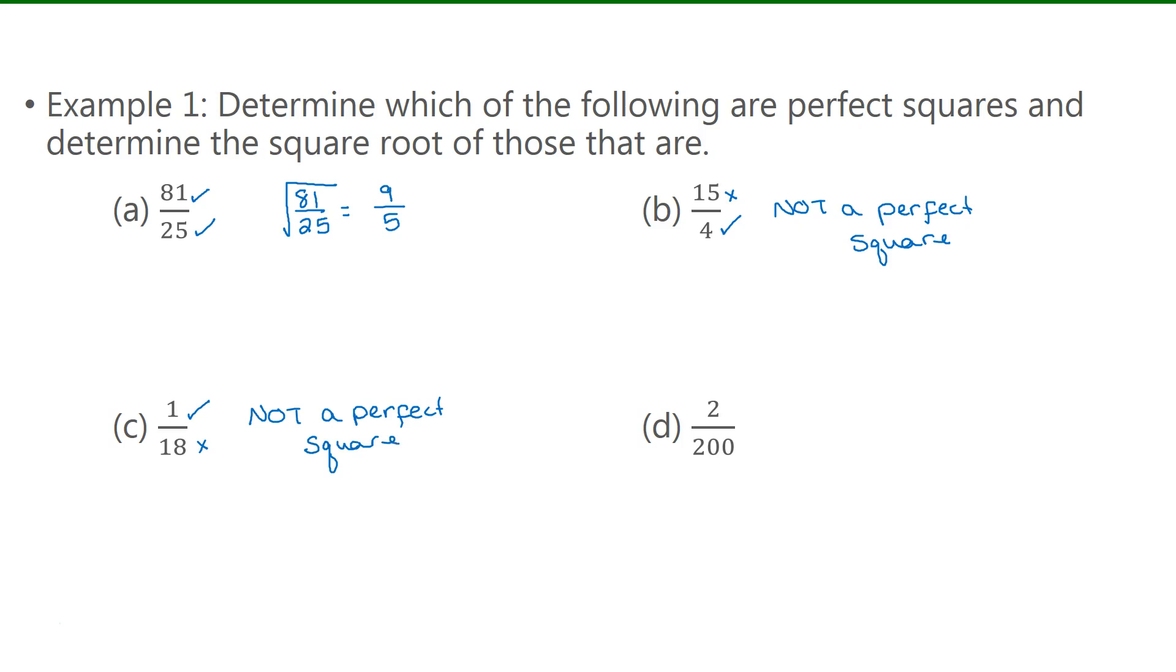For d, you may say that this is not a perfect square since 2 and 200 are not, but we can reduce this one. I can divide numerator and denominator by 2. Doing that gives me 1 over 100. Now 1 is a perfect square and 100 is, so I'm able to find the square root. Square root of 1 is 1 and square root of 100 is 10. Always make sure you look to see if fractions can be reduced before you say it's not a perfect square.